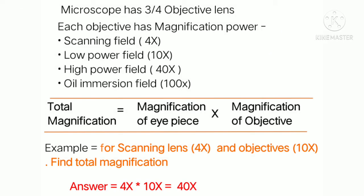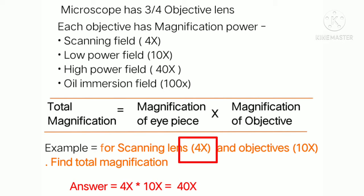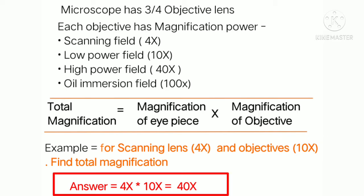A microscope has three to four objective lenses divided into four types by magnification power: 4x for scanning field, 10x for low power field, 40x for high power field, and 100x for oil immersion. To find total magnification, use the formula: total magnification = magnification of eyepiece × magnification of objective. For example, scanning lens (4x) × eyepiece (10x) = 40x total magnification.